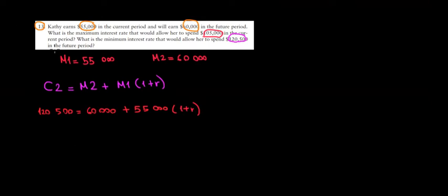Now let's do some math. Let's take this term on the other side. So $60,000, we're taking it over here. $120,500 minus $60,000, we are left with $60,500 equals to $55,000 times 1 plus R.